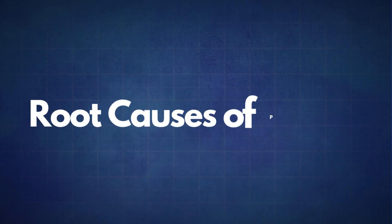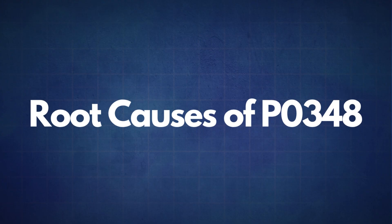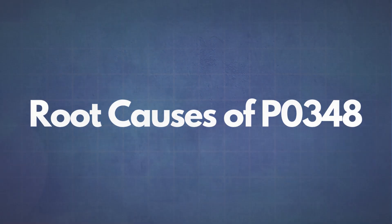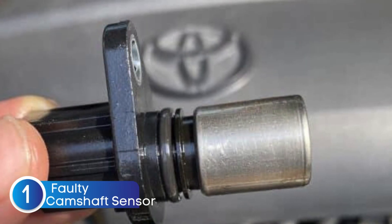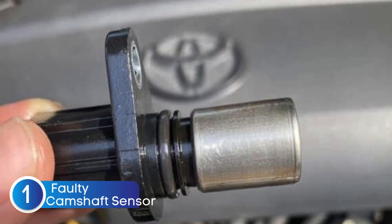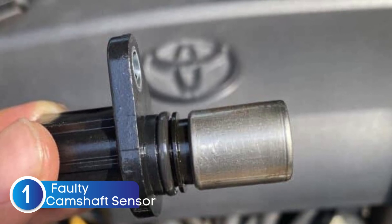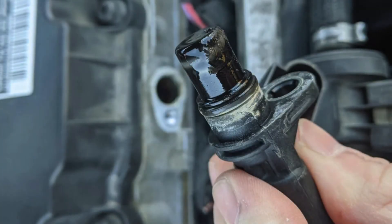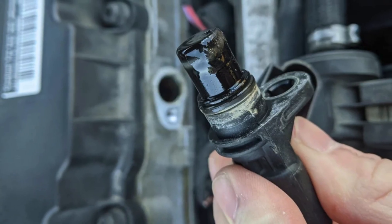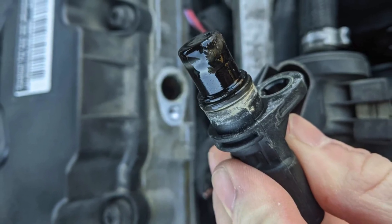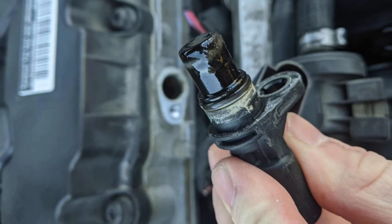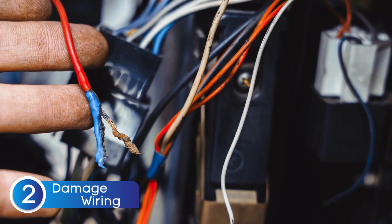If the P0348 code reappears, it's time to look into some common root causes. The first cause is a failing or defective camshaft position sensor. Over time, the sensor can wear out or get damaged by heat, oil contamination, or vibration. When the camshaft position sensor fails, it cannot accurately detect the position of the camshaft, which throws off the timing and triggers the P0348 code.